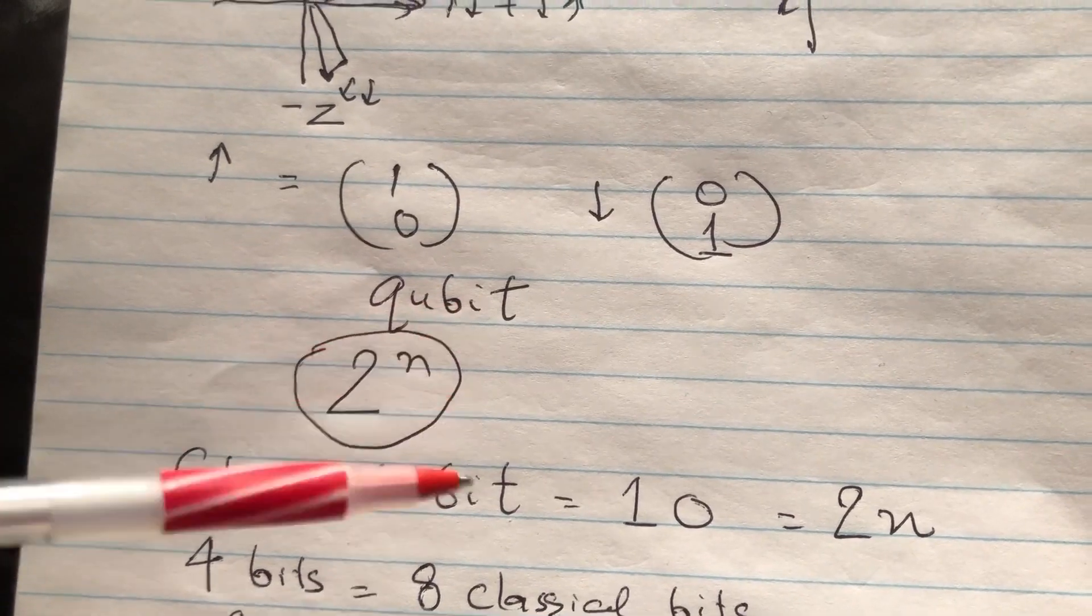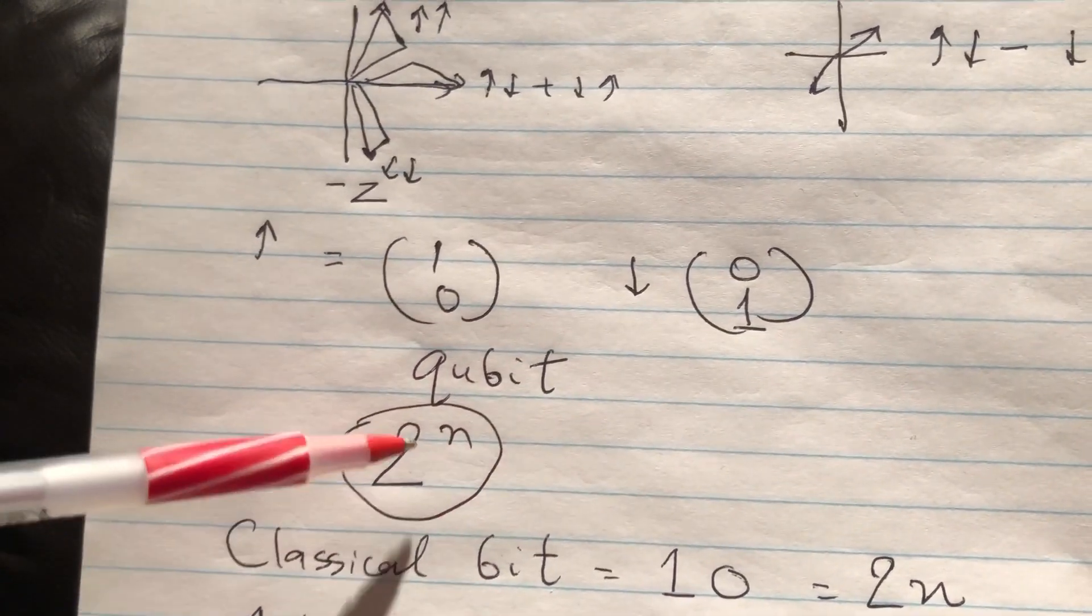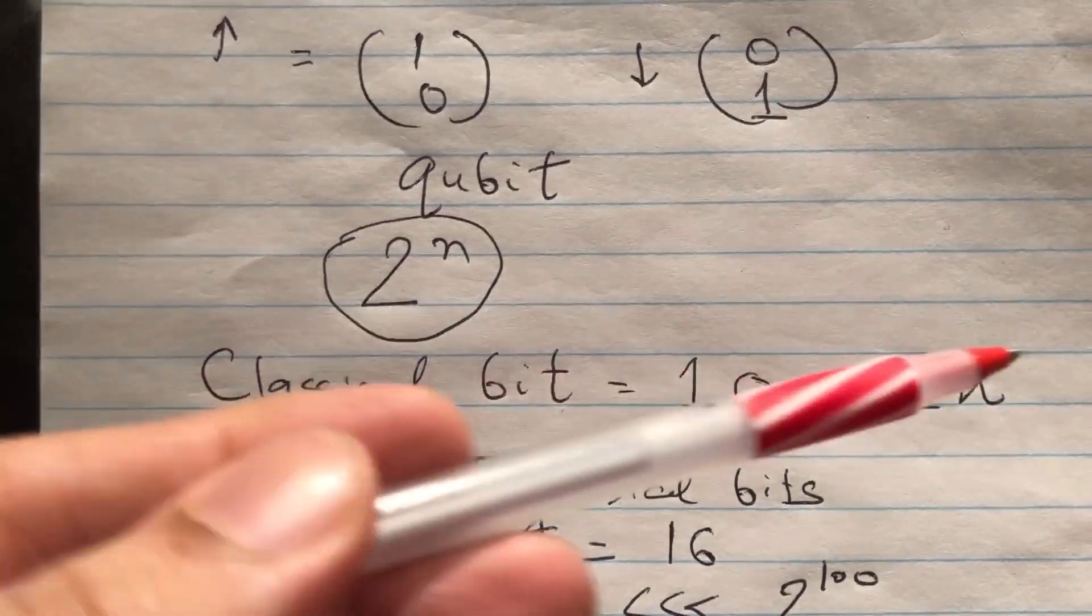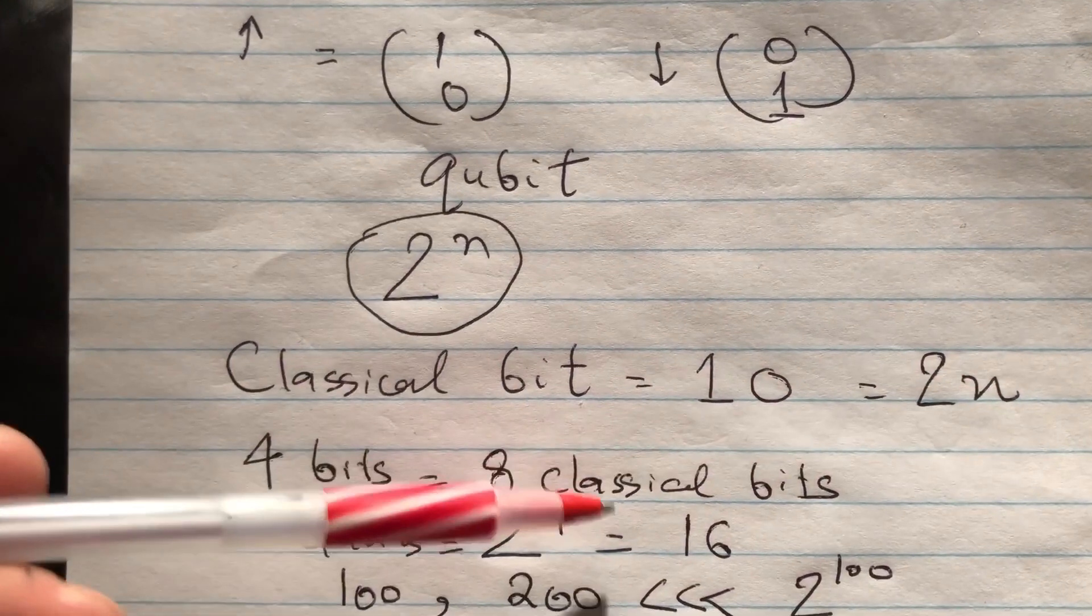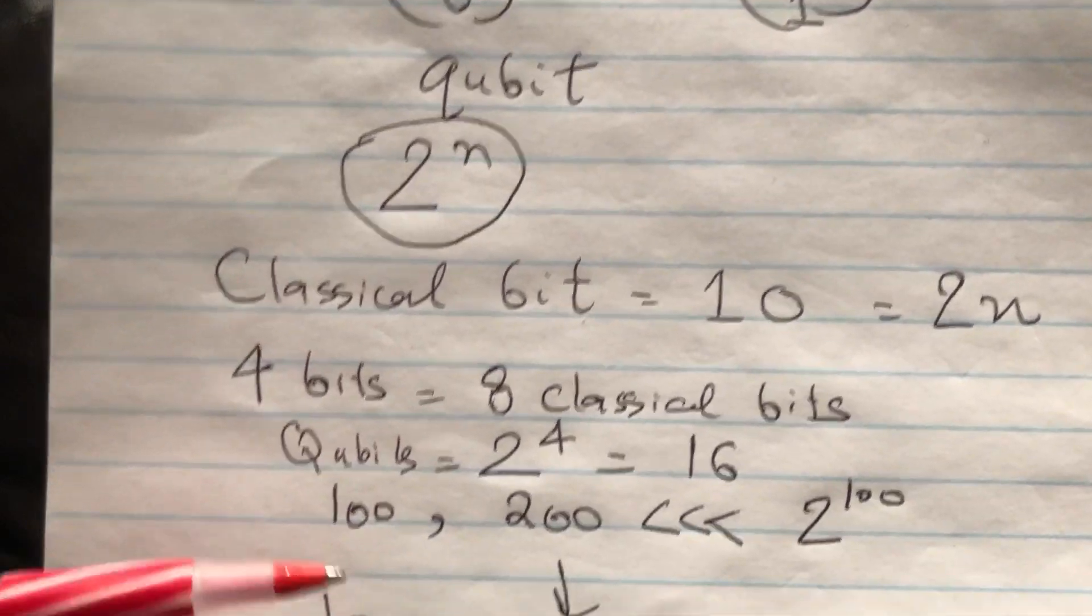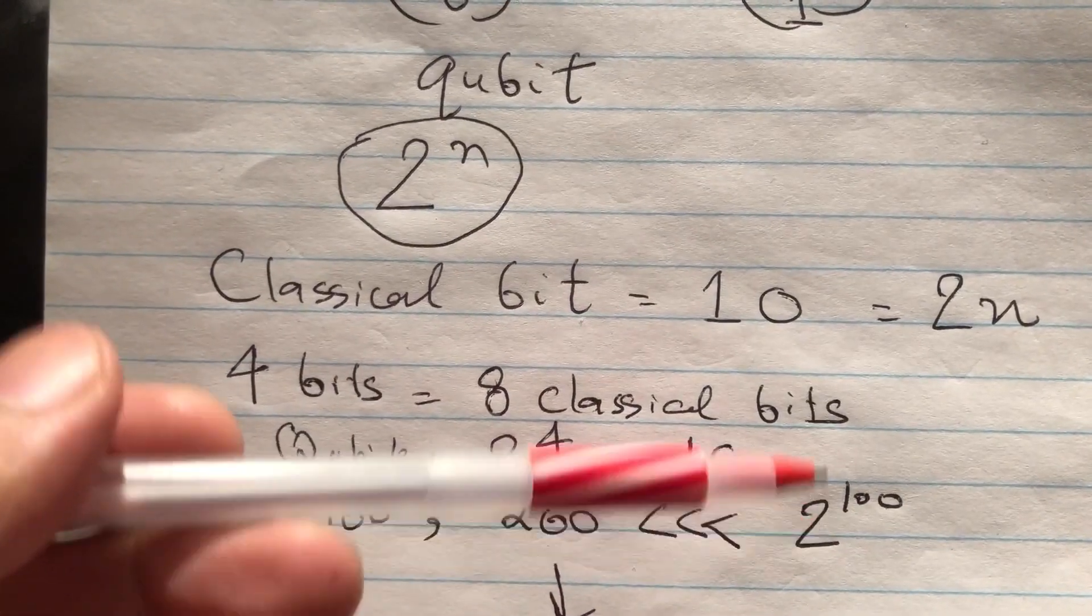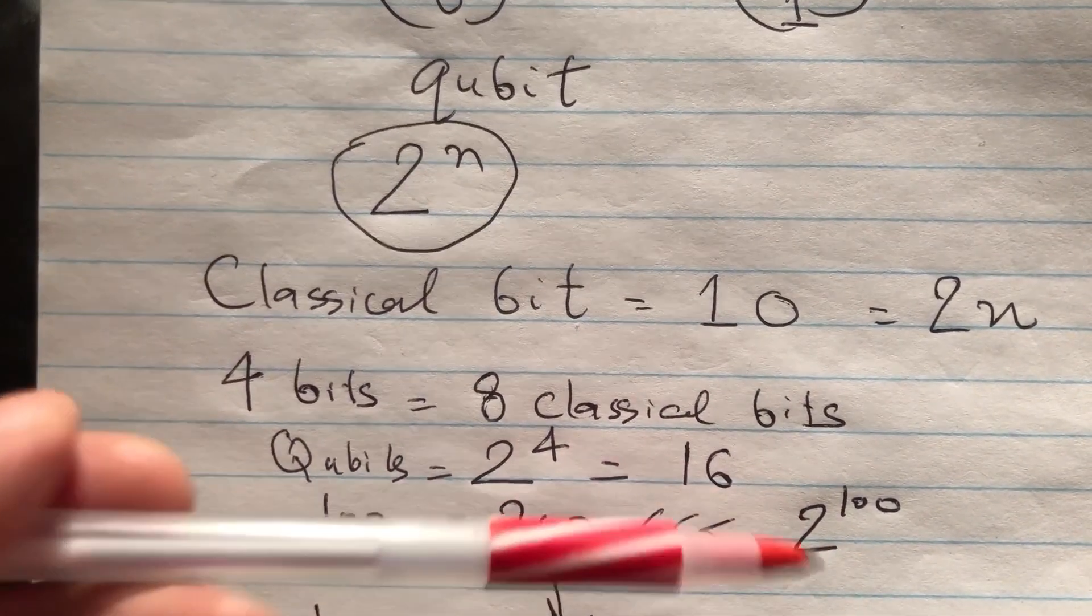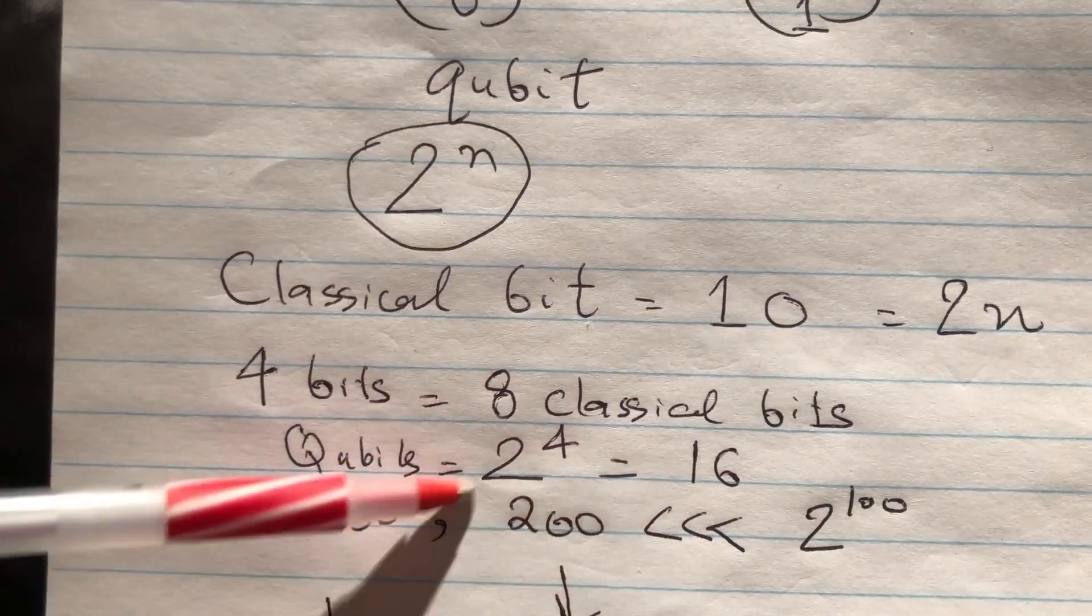The qubit, on the other hand, has much more states in it because of all these combinations. It's 2 to the n—this is an exponential term which means it will increase. Take the example: 4 bits, so n is 4. In terms of classical bits, you will have 2 times 4 is 8. In terms of qubits, 2 to the n is 16. If you keep on increasing, take n is equal to 100—classical bit would be 200, but quantum bits 2 to the 100 is a large number. So quantum computer has many more states to work with.